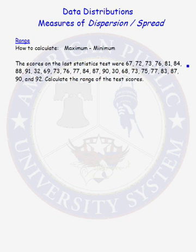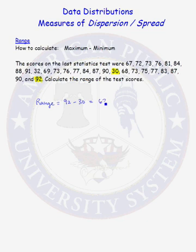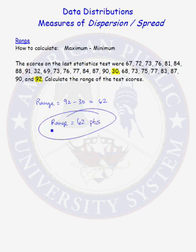Before leaving this data set of 25 test scores, let's also calculate the range. The range is just equal to the maximum minus the minimum value. The maximum value is 92 and the minimum value is 30, so the range is equal to 92 minus 30, which is 62. The range equals 62 points for the 25 test scores.